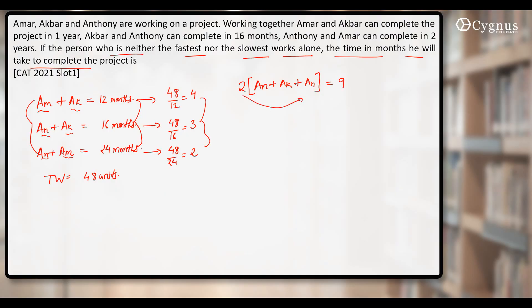When 2 comes on this side, we get 1 month work of Amar, Akbar and Anthony. This comes out to be 4.5. We also know that 1 month work of Amar and Akbar together was 4. So if you put Amar plus Akbar equal to 4 here, the value of Anthony becomes 0.5.